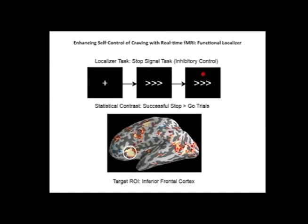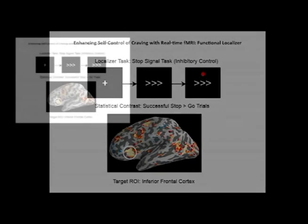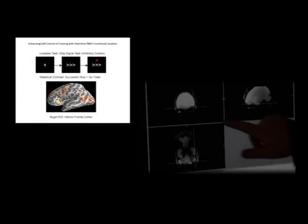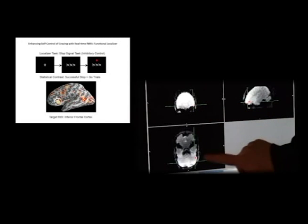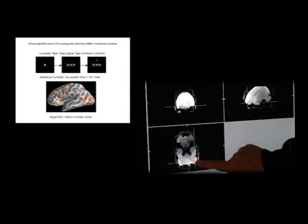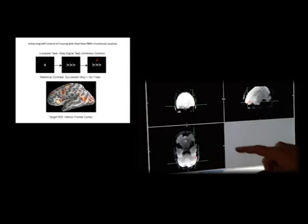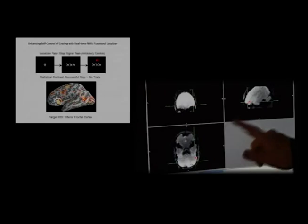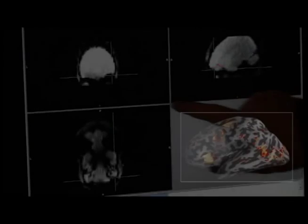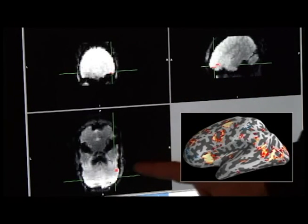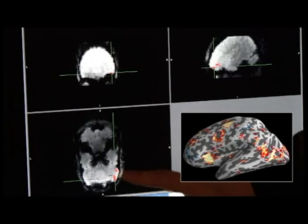After the participant completes the task, the experimenter analyzes the data to isolate the area of brain activation in the LIFC involved in stopping, which can vary slightly from participant to participant. Here we can see that there are two areas of activation in the right LIFC for this participant. For this image, left equals right and right equals left.